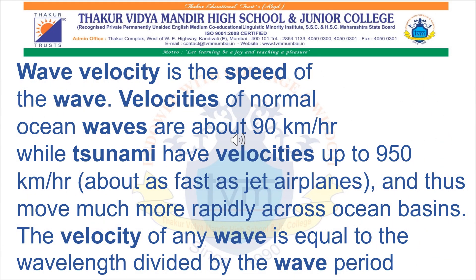Wave velocity is the speed of the wave. Velocities of normal ocean waves are about 90 kilometers per hour, while tsunamis have velocities up to 950 kilometers per hour — about as fast as jet airplanes — and thus move much more rapidly across ocean basins. The velocity of any wave is equal to the wavelength divided by the wave period.